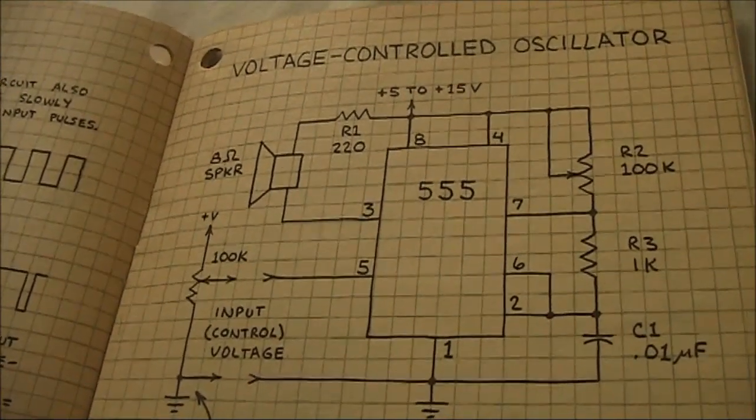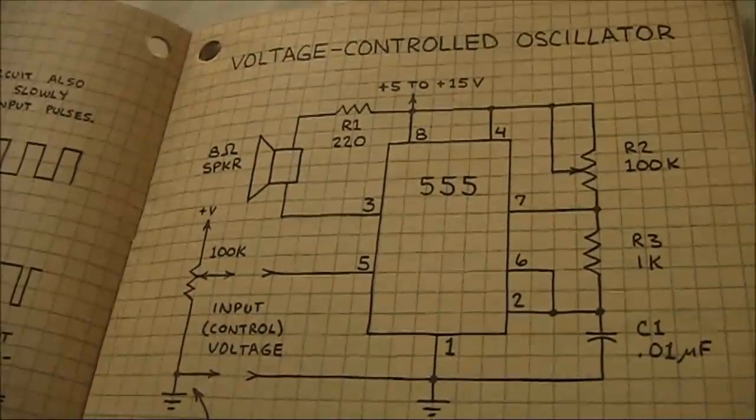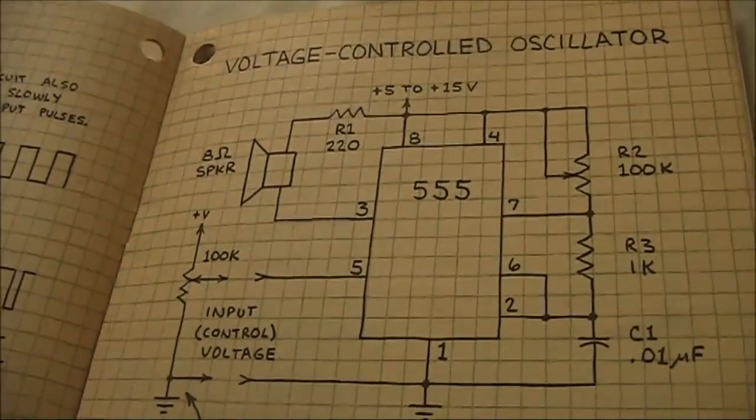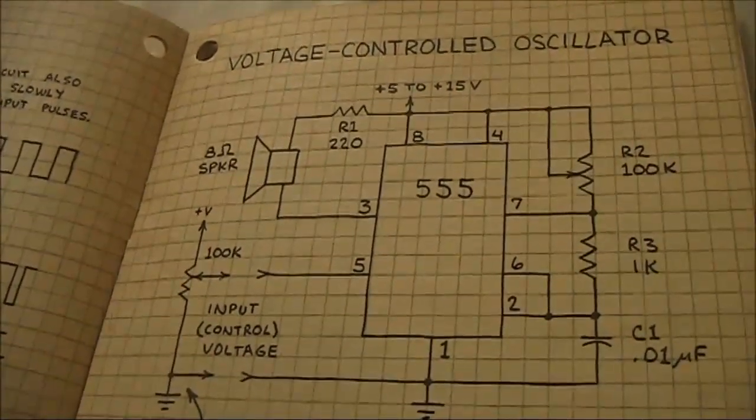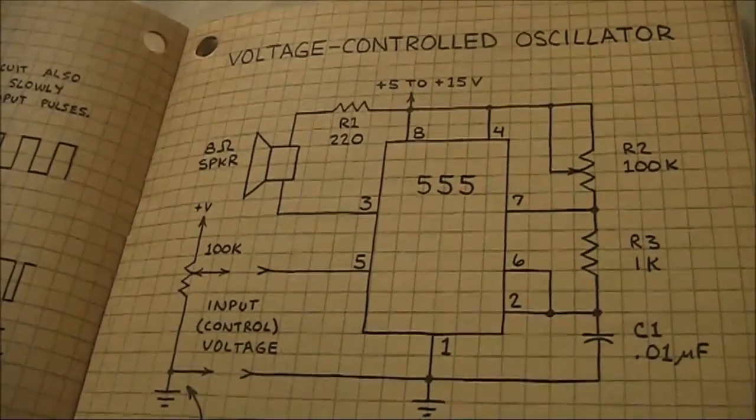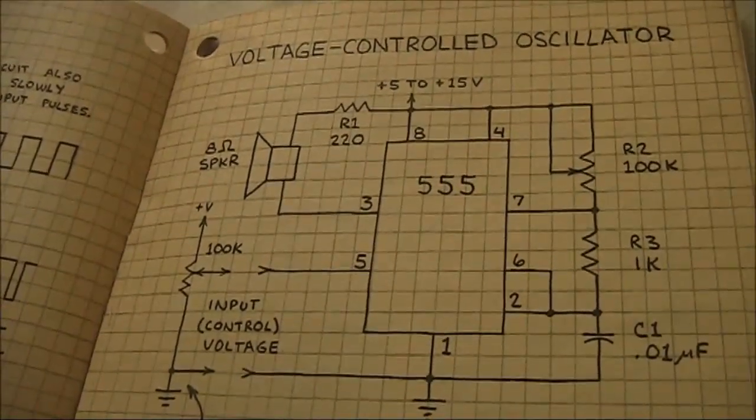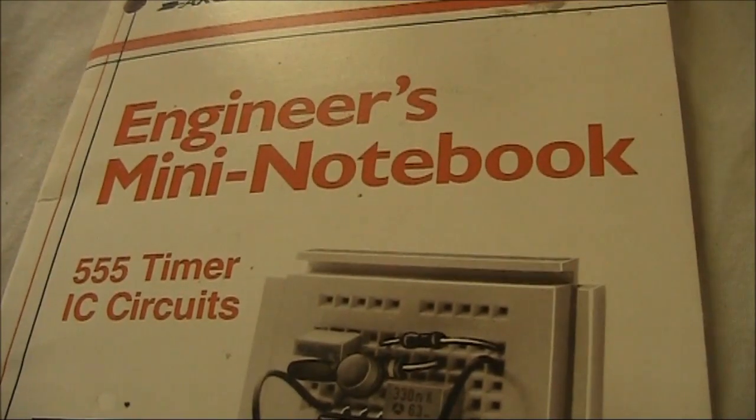Another possibility is to replace the transducer with a voltage controlled oscillator, such as this one with a 555. The main drawback is you will need a power supply to run it. This one is from a Forrest Mims book.